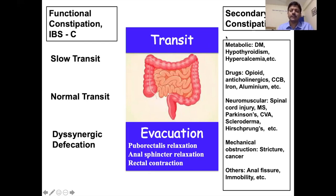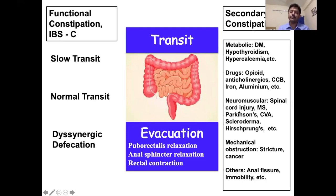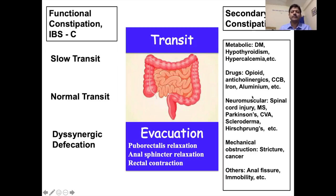This process may be disturbed by secondary factors, including metabolic conditions like diabetes mellitus, hypothyroidism, and hypercalcemia; drugs, of which opioids are very important, along with anticholinergics, calcium channel blockers, and iron. Neurological conditions like spinal cord injury, multiple sclerosis, stroke, and Parkinson's disease, as well as scleroderma, mechanical obstruction due to stricture or tumor, and painful conditions like anal fissure may also make it difficult to pass stool.